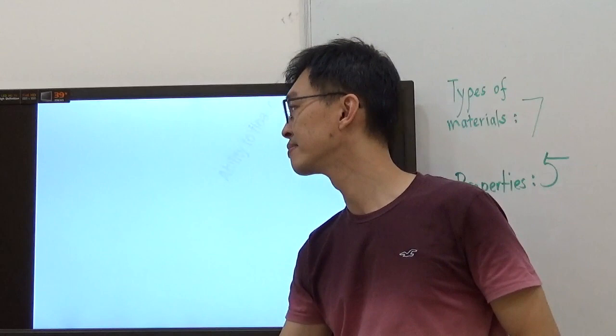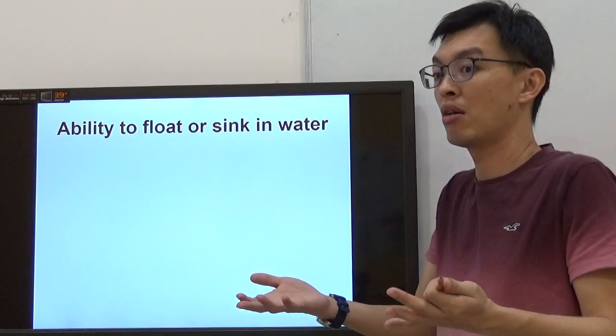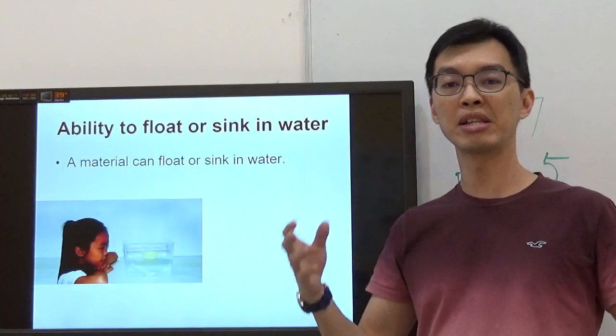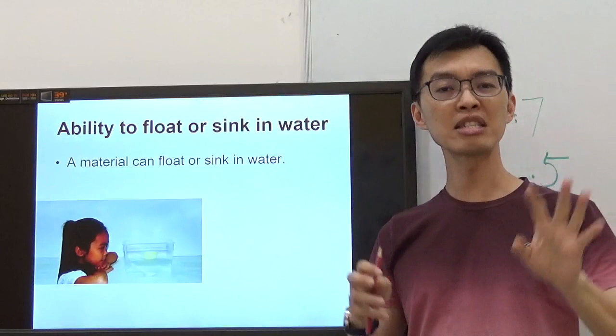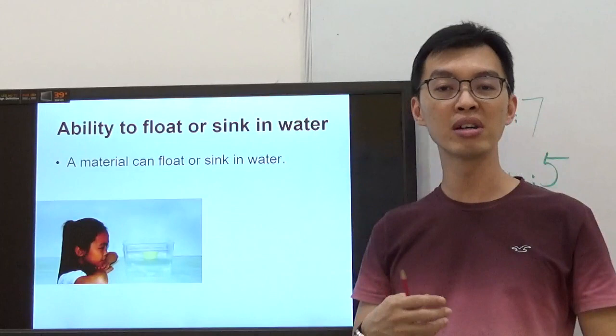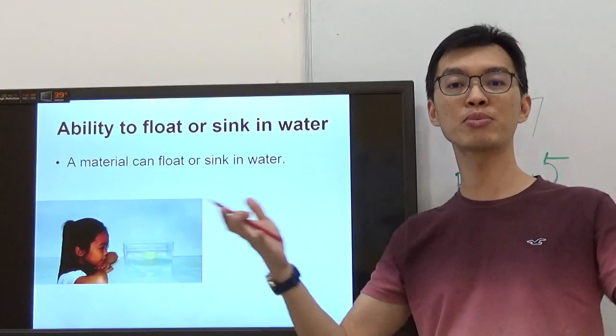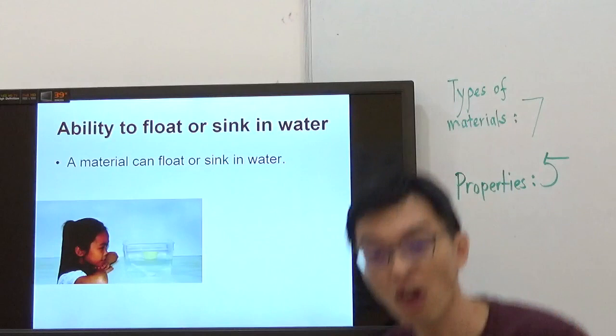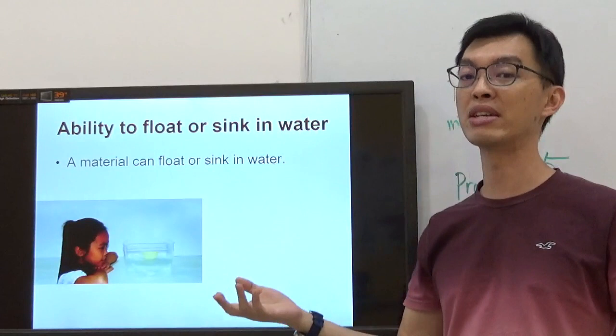Next, third property: ability to float or sink in water. A material can float or sink in water. I wanted to do this experiment in the tuition center. Maybe you can do this with your mommy and daddy. Take a few different items like an eraser, a ball, a ping pong, a pencil, or favorite toy. Fill a basin of water and drop them one by one. You will observe whether they sink or float. Please do so with your parents together.